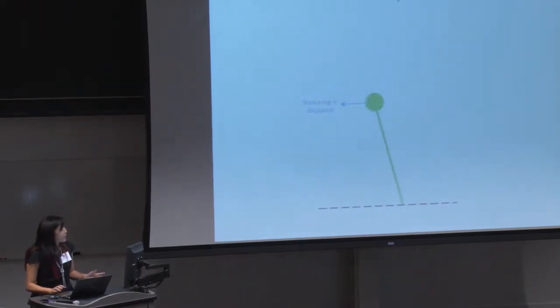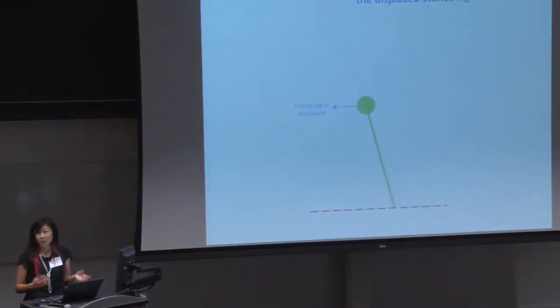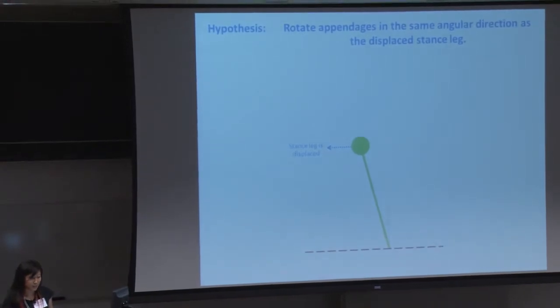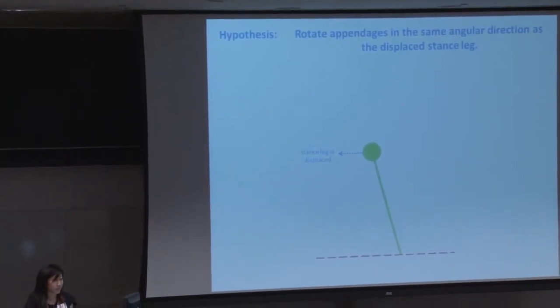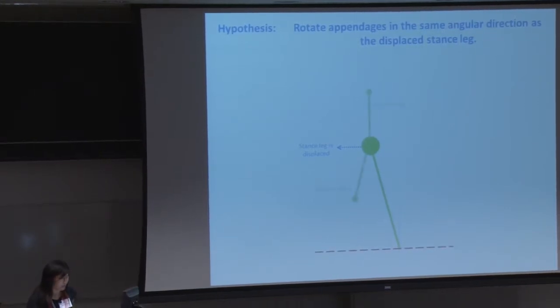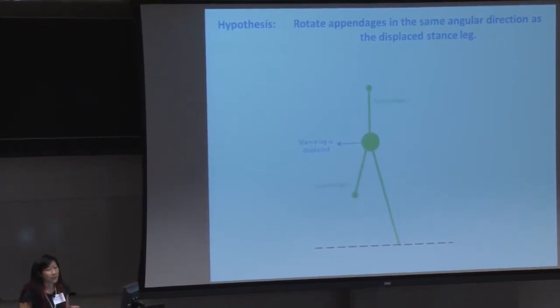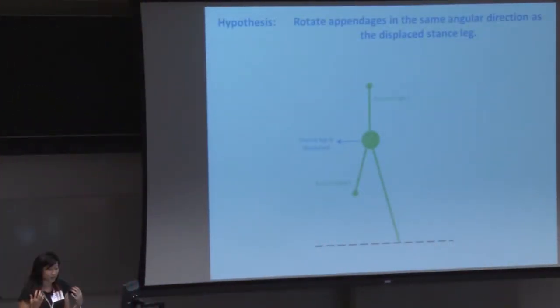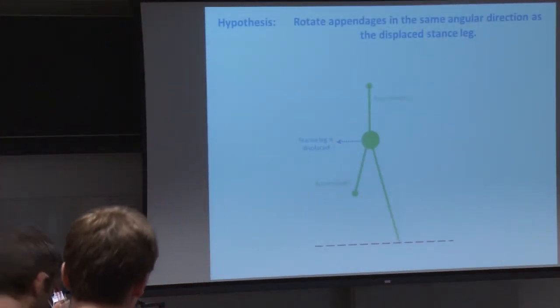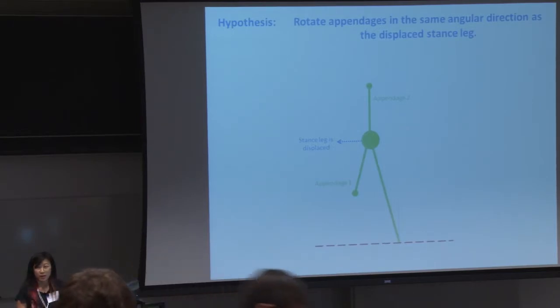Let's see. So our hypothesis is that you would rotate your appendages in the direction that your stance leg is displaced. So we're approximating the center of mass with your stance leg, and we can step through this with a simple balance model. So you have an inverted pendulum with a main mass, and you have two appendages. And the question is, how do you rotate these appendages to bring your center of mass back over your ground contact point?